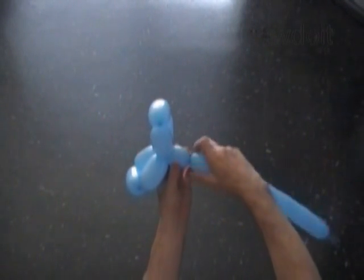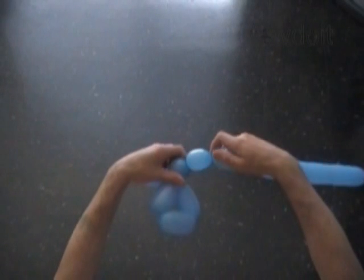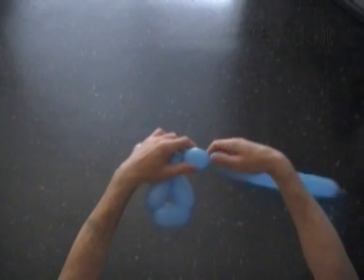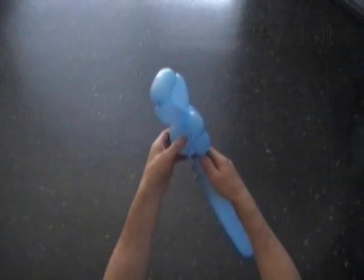Twist a chain of the next 2 bubbles. Make each bubble about 1.5 inch size long. The length of these 2 bubbles together should be a bit longer than we made the long bubble.